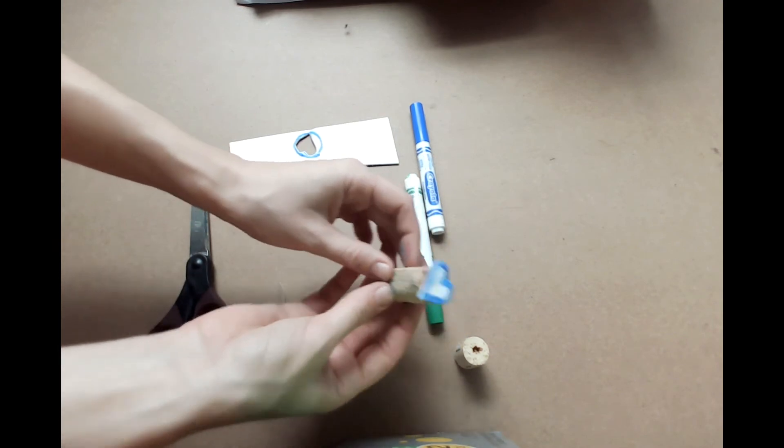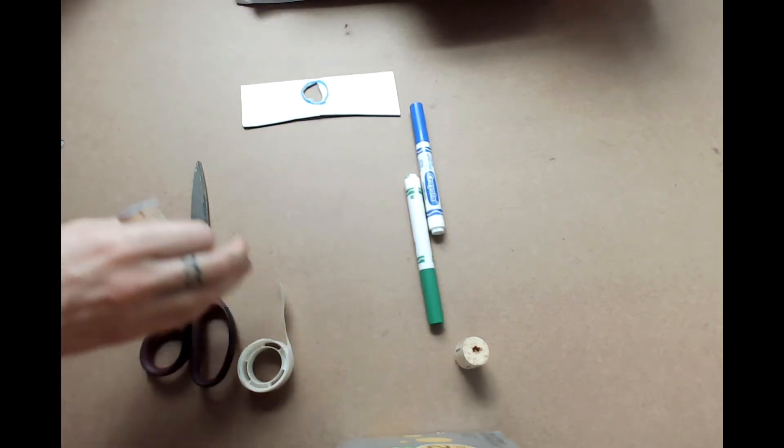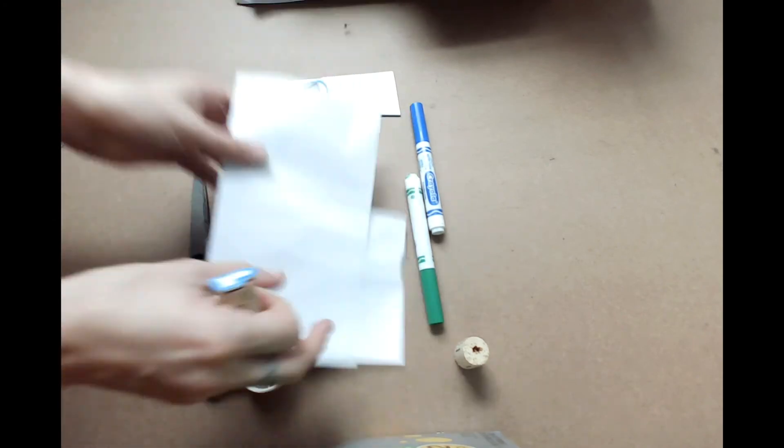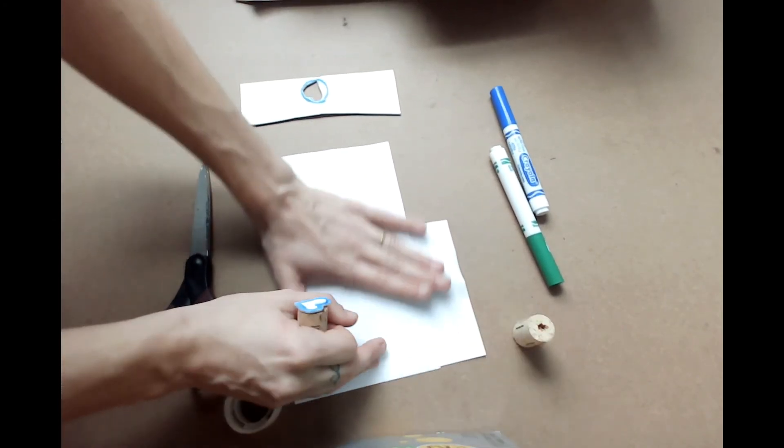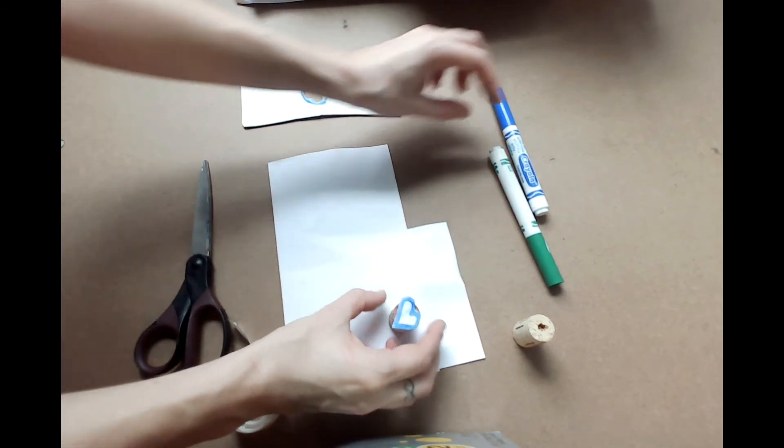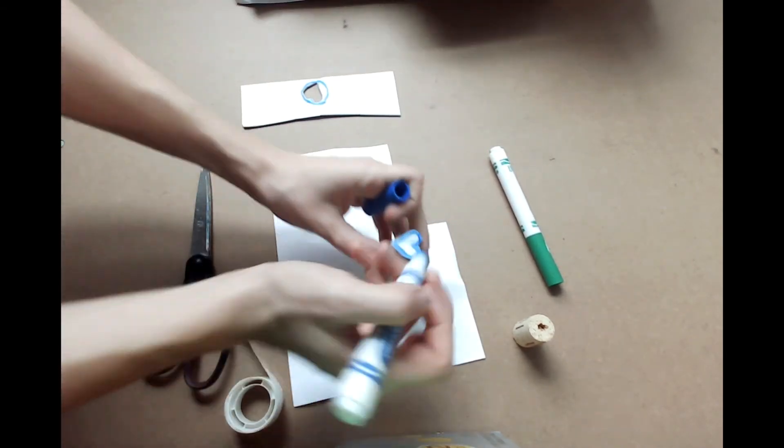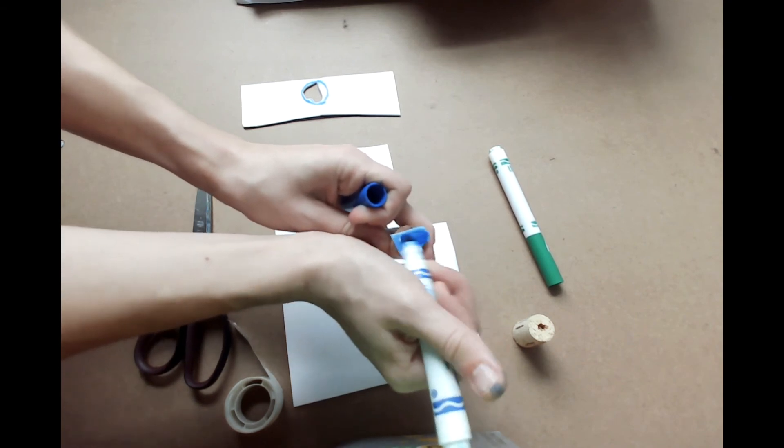Awesome! Now, to test out our stamp, we're going to need a piece of scrap paper. You'll take your paper and lay it down nice and flat. Then we'll take our cork stamp and use our marker to color in the shape all the way.